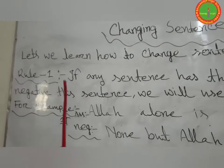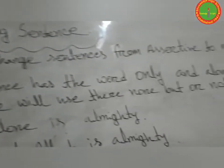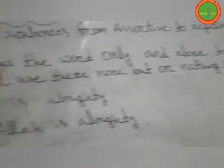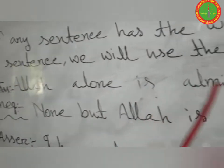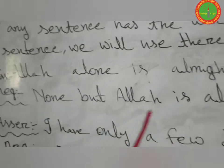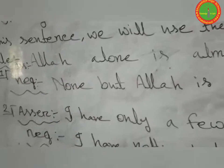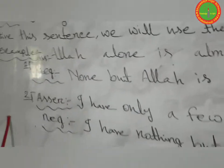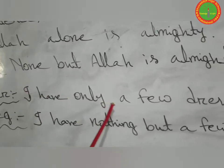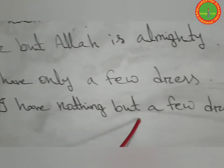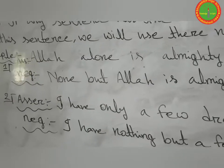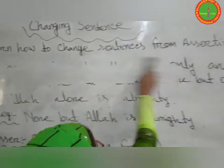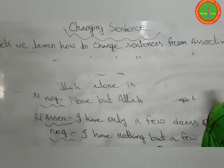Give your attention. Rule number 1: if any sentence has the word 'only' or 'alone', to make it negative we will use 'none but' or 'nothing but'. For example — Assertive: 'Allah alone is almighty.' Negative: 'None but Allah is almighty.' Because of 'alone', we use 'none but'. Next example — Assertive: 'I have only a few dresses.' Negative: 'I have nothing but a few dresses.' I hope you have understood.